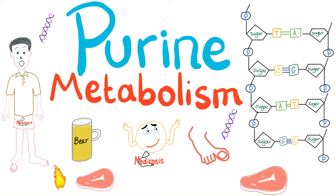It's Medicosis Perfectioneros, where medicine makes perfect sense. Today we'll talk about purine metabolism. As you know, your lovely DNA is made of sugar, phosphate, and nitrogenous bases, and these nitrogenous bases are either purines or pyrimidines.